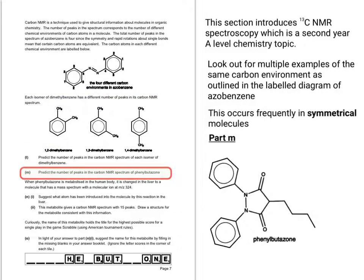So part M wants you to predict the number of peaks in the carbon NMR spectrum of phenylbutazone. So starting with the two benzene rings we can then move on. So it's going to be 10 peaks in total.